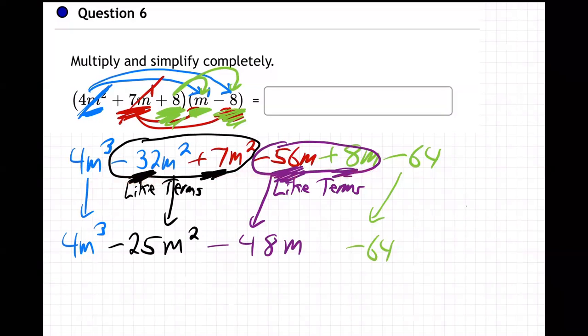And then, that's the multiplying. And then we simplify. How do we simplify? We combine like terms, meaning same powers. So these two will combine minus 32 plus seven, and they're both m squared. This is minus 25m squared. And these two will combine minus 56m plus 8m is minus 48m because they're like terms. They have the same letter pattern, plain m. And there we go.